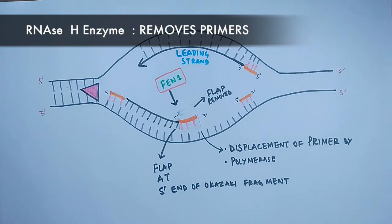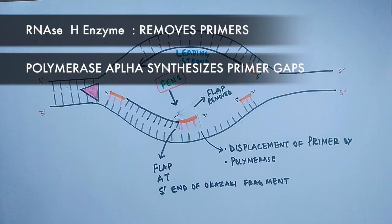So after the removal of these primers, the polymerase alpha comes in and synthesizes the deoxynucleotides at these primer sites which have been just removed.